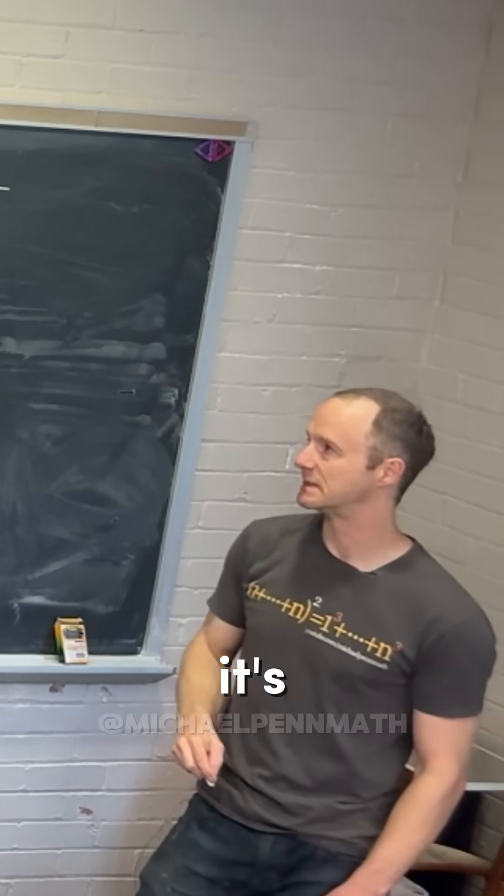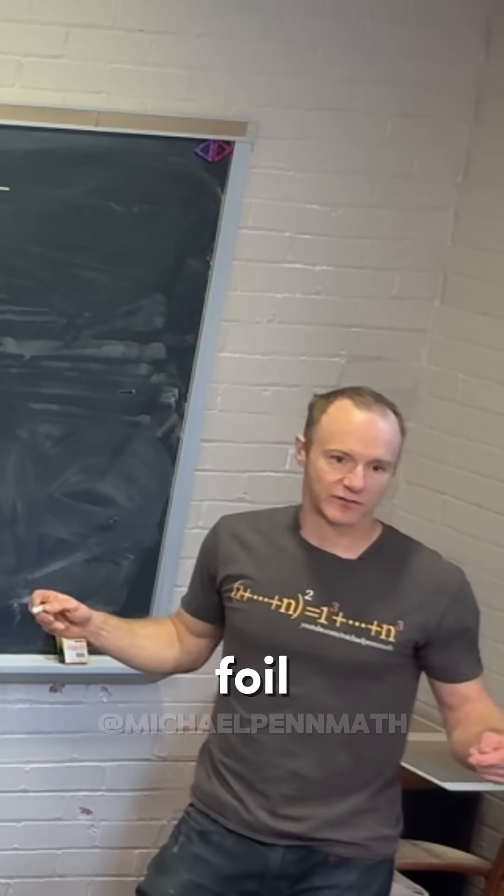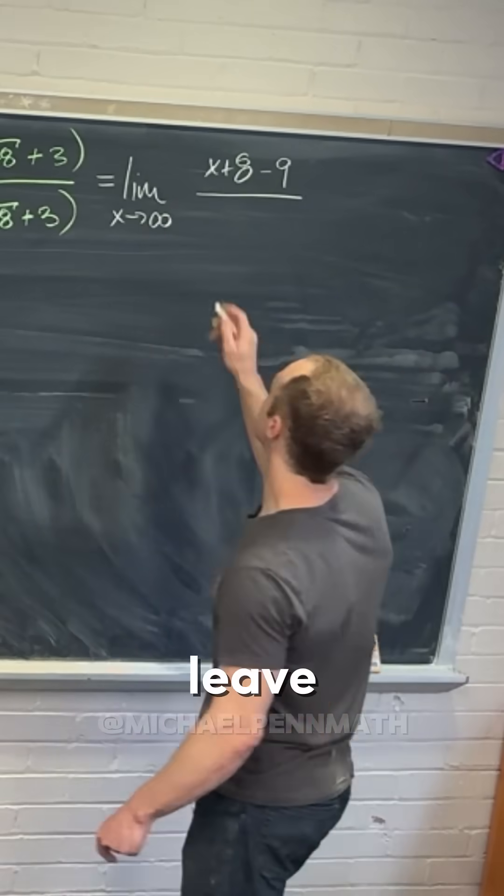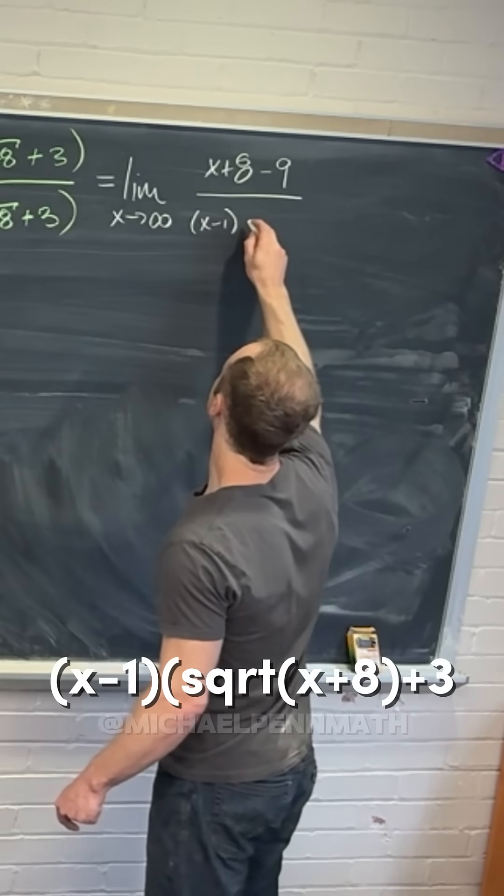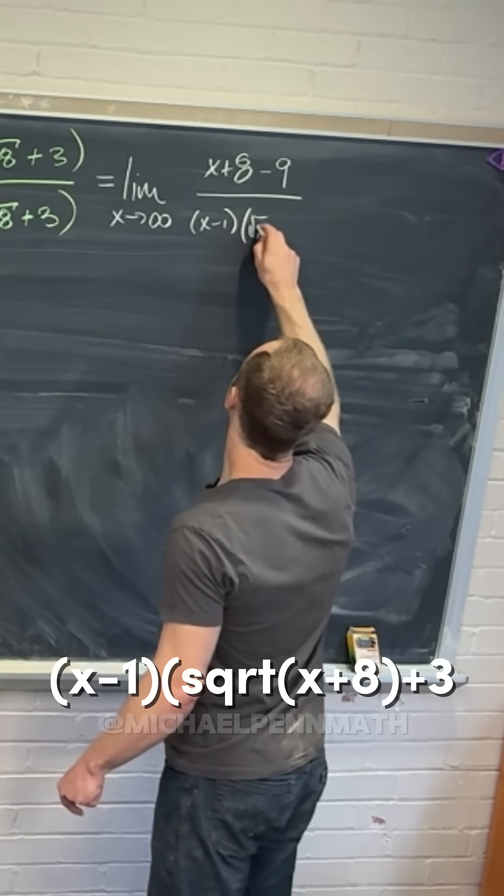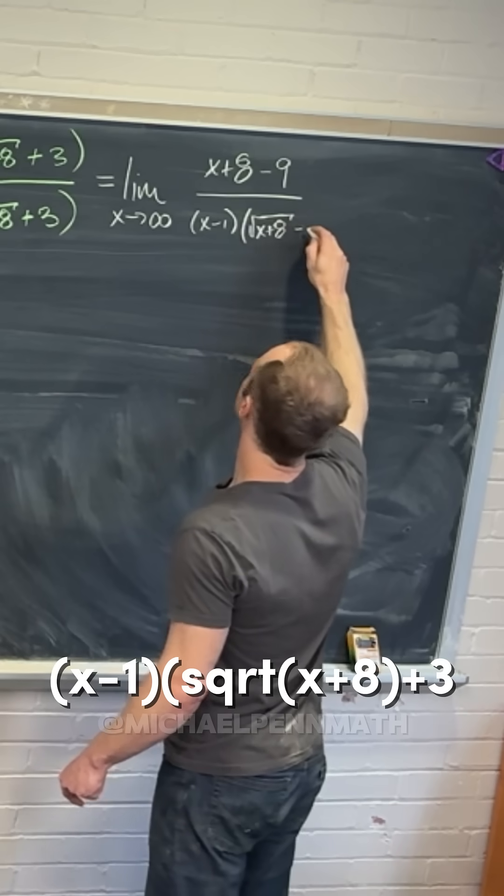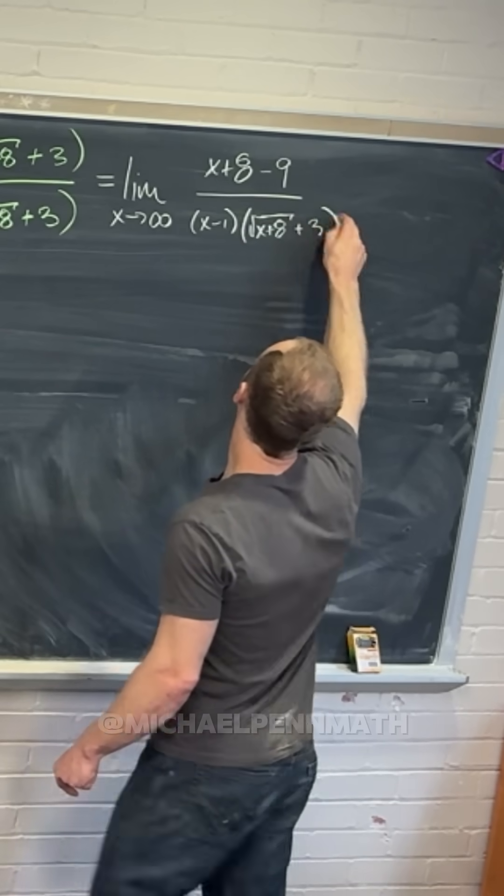In the denominator, it's not really advantageous to FOIL this out, so we're just going to leave it as x minus 1 times the square root of x plus 8 plus 3.